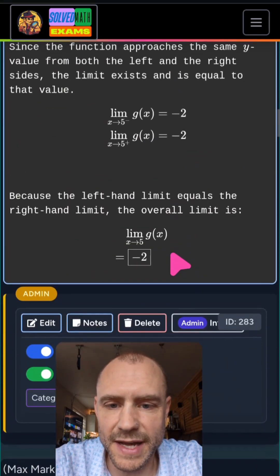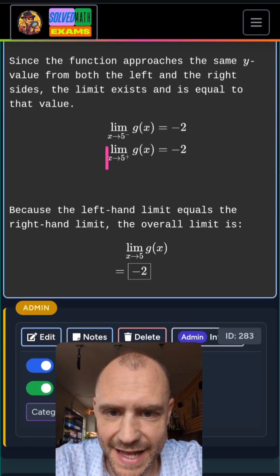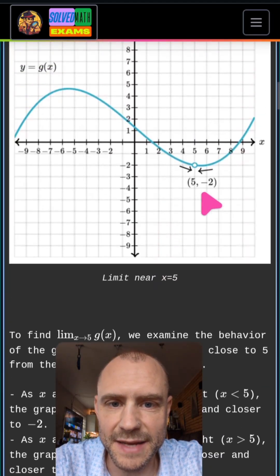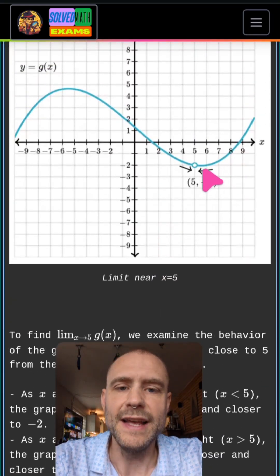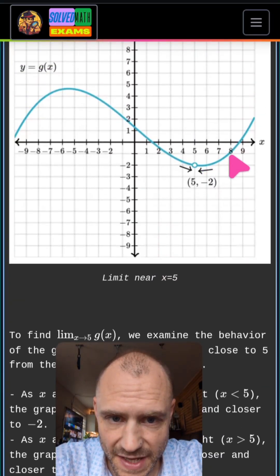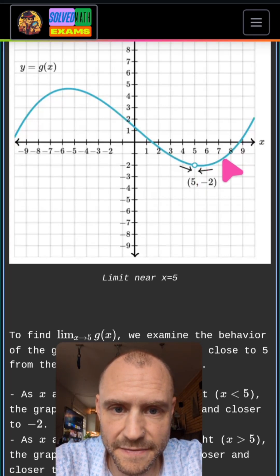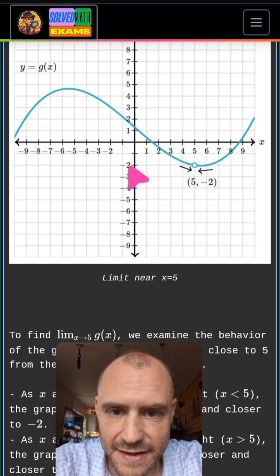And then coming from the right, we have this notation, x approaching 5 with a plus sign. That means from the right. So that means we come in from the right here. And then notice these two match. So coming from the right as well, the function values approach this here of negative 2.